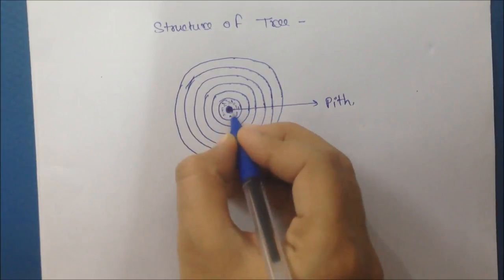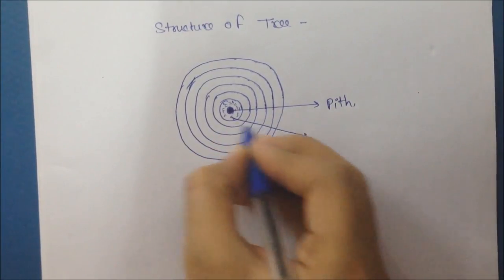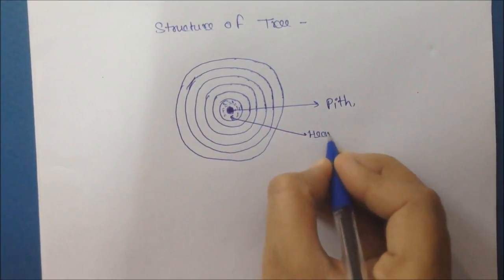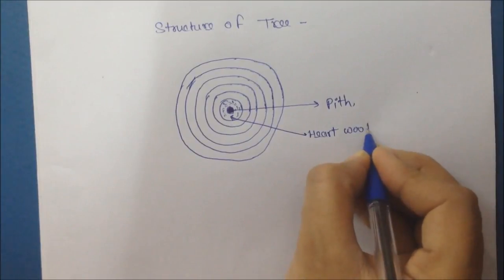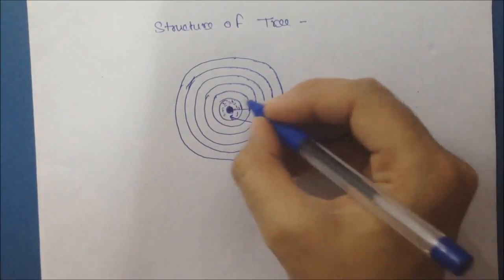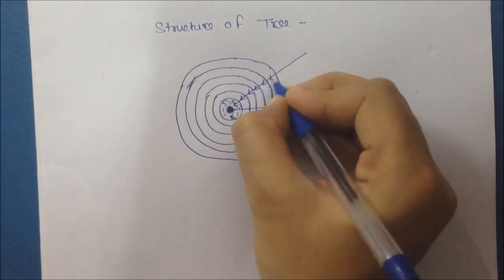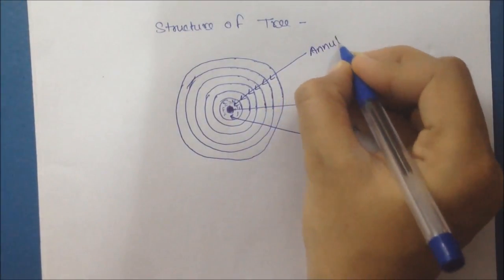Second is hardwood. Ring surrounding the pith is called hardwood and it is dark color. It provides strength and rigidity and pith and hardwood which doesn't participate in tree development and growth.